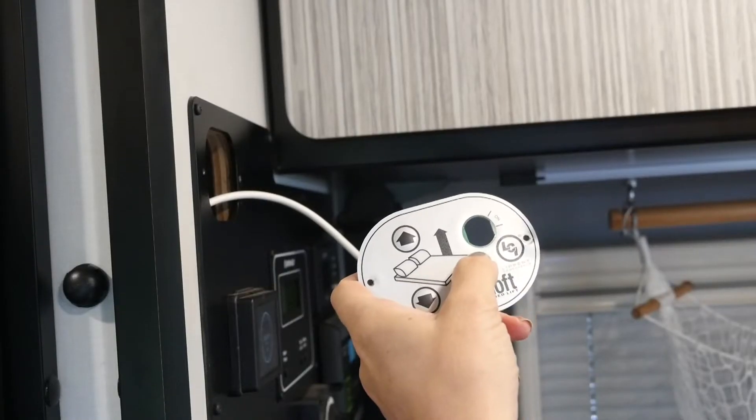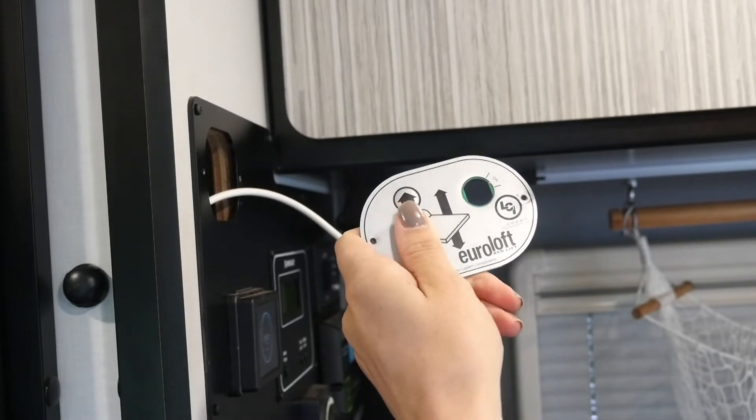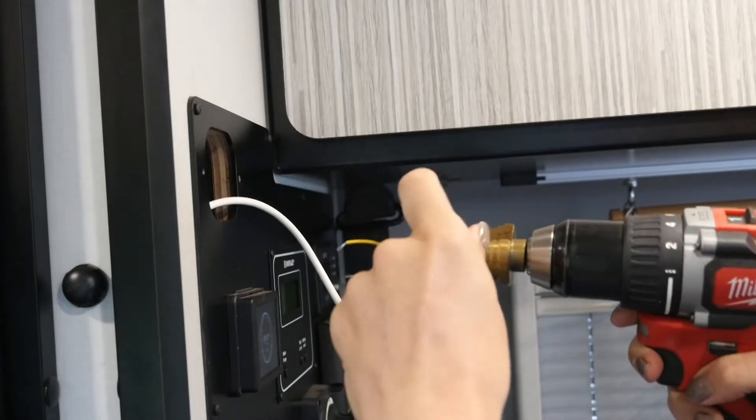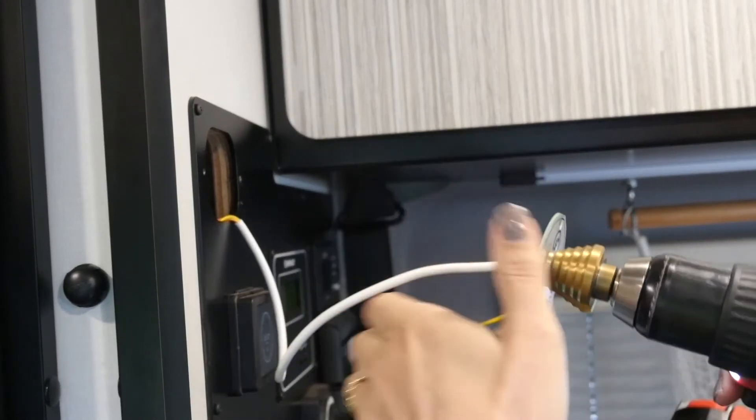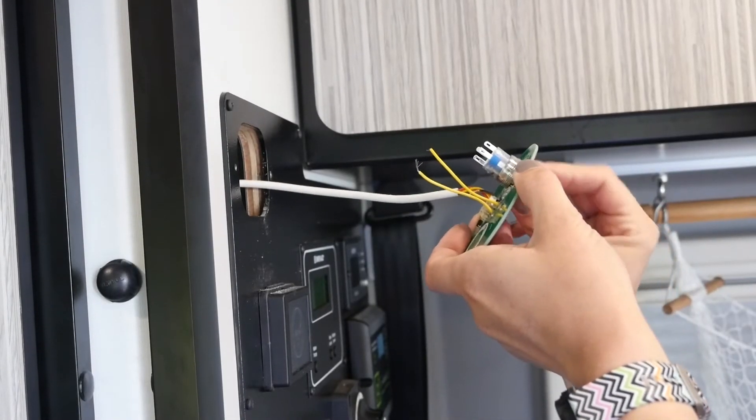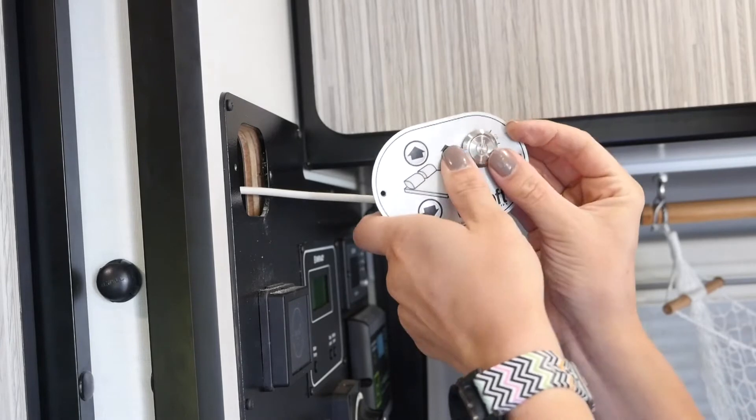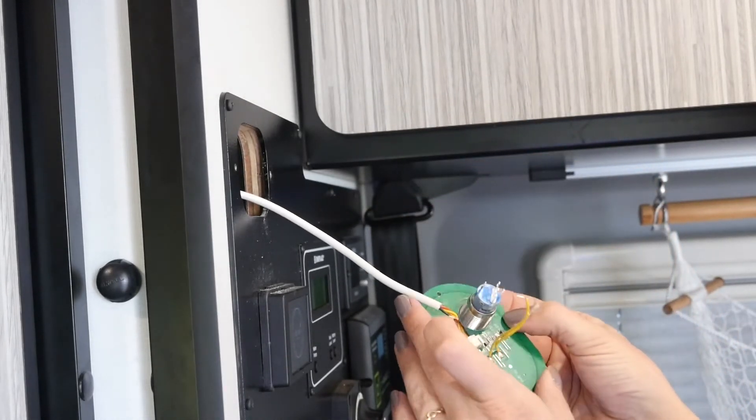Now we're going to use a step bit to ream out this little green part. If you don't have a step bit you can use a regular drill bit. Once we've got it reamed out enough, we just slide in our button. Doesn't that look beautiful?